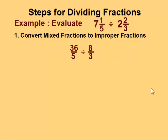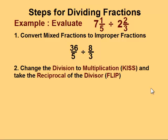Next, we rewrite the question with our improper fractions. So our question now reads 36/5 divided by 8/3. In the second step, we change the division to multiplication. I remember this by thinking of a kiss, which we symbolize on a letter with an x, indicating multiplication.